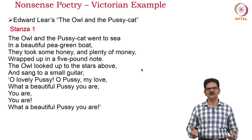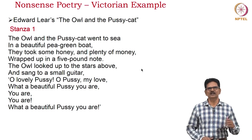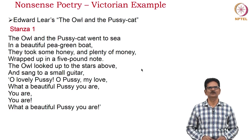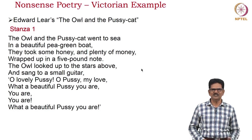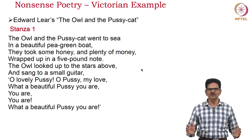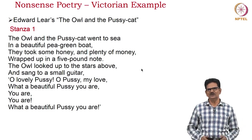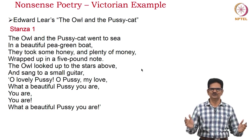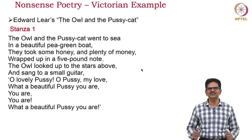We have the example of nonsense poetry from Edward Lear's poem called The Owl and the Pussycat. We have only the first stanza here: 'The owl and the pussycat went to sea in a beautiful pea-green boat. They took some honey and plenty of money wrapped up in a five-pound note. The owl looked up to the stars above and sang to a small guitar: O lovely pussy! O pussy, my love! What a beautiful pussy you are! You are! You are! What a beautiful pussy you are!'